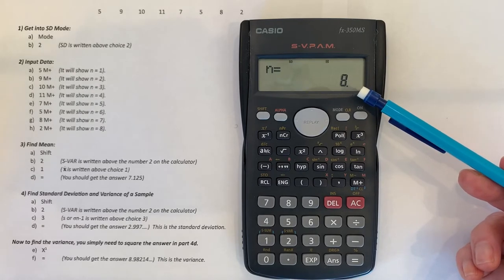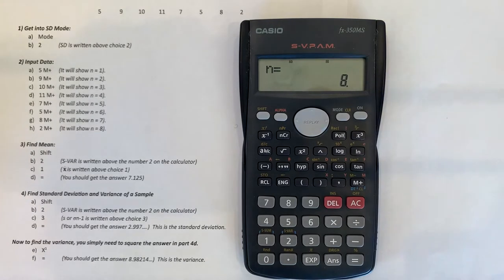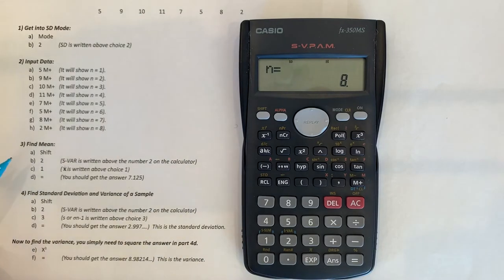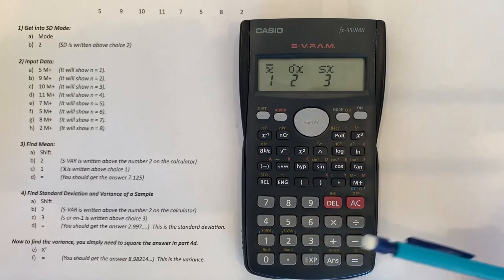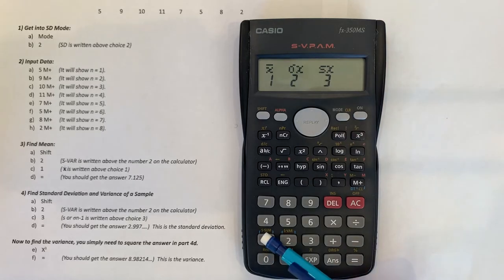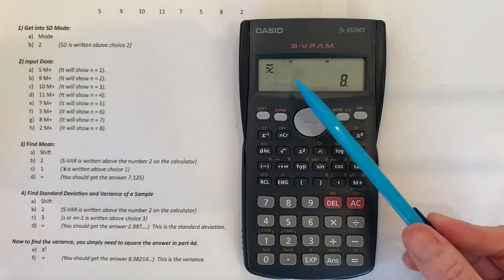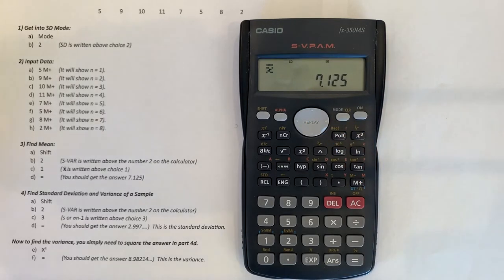So now all we have to do is go to the statistical menu in the calculator and find the mean, standard deviation, and variance. You get to the menu from shift 2 and then choose which one you want to find. To find the mean, choose number 1 and then hit equals. So we go to shift 2, I want the mean X bar, it's choice number 1, so I hit 1. Notice the cursor is still blinking, meaning I have to hit equals to get the answer. I hit equals and it gives me an answer of 7.125.